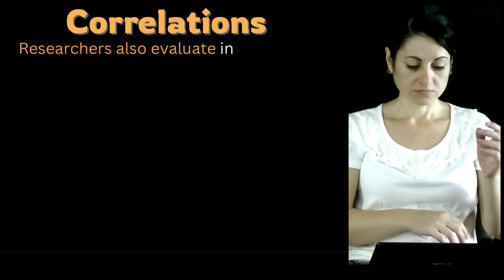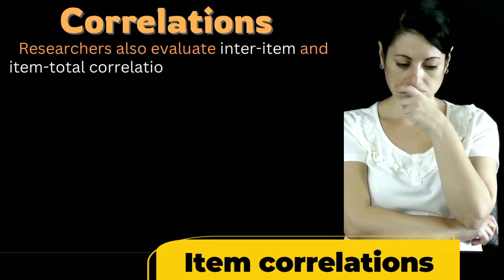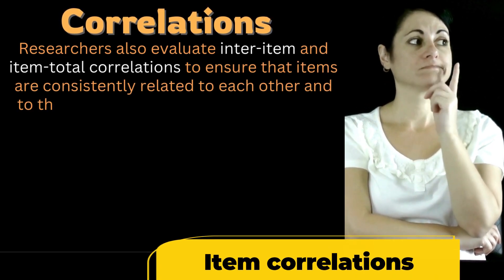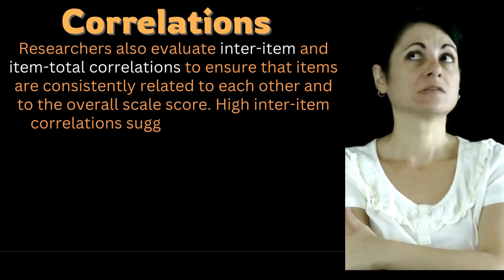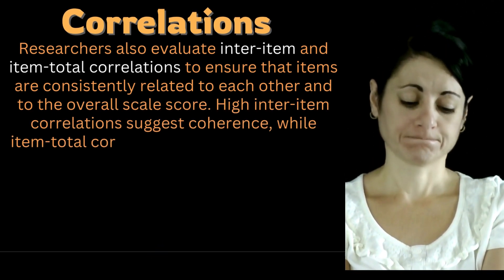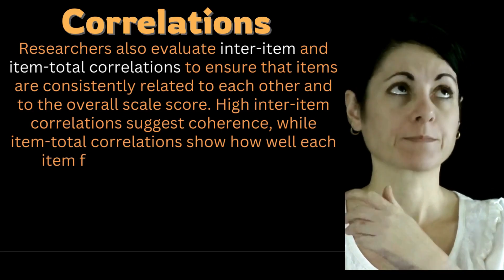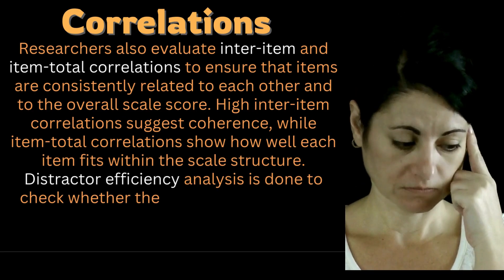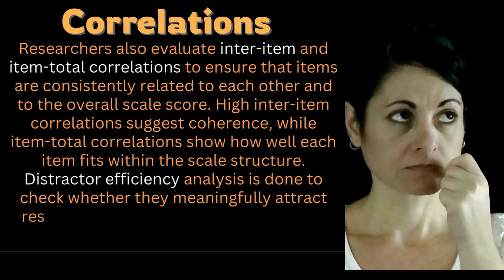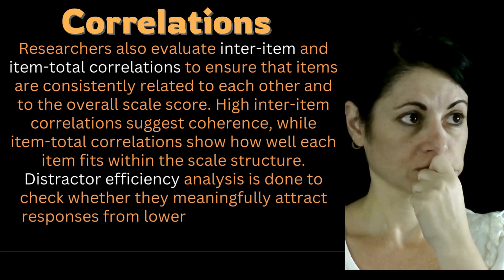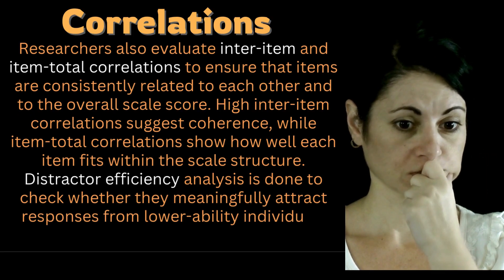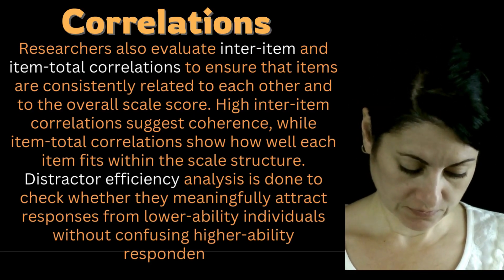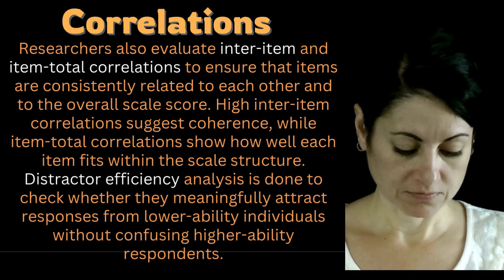Researchers also evaluate inter-item and item-total correlations to ensure that items are consistently related to each other and to the overall scale score. High inter-item correlations suggest coherence, while item-total correlations show how well each item fits within the scale structure. Distractor efficiency analysis is done to check whether they meaningfully attract responses from lower ability individuals without confusing higher ability respondents.